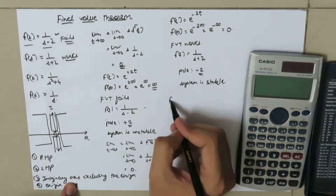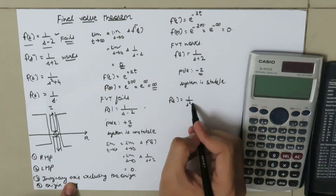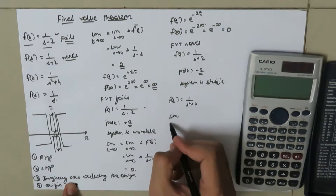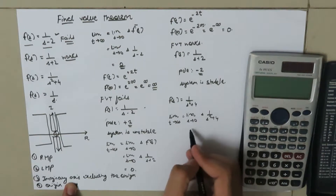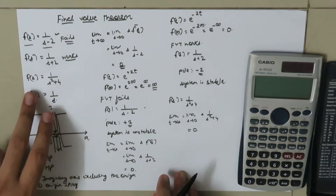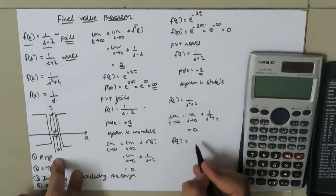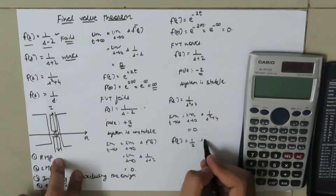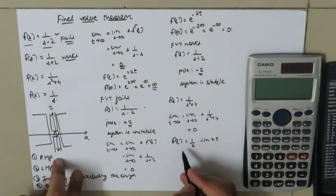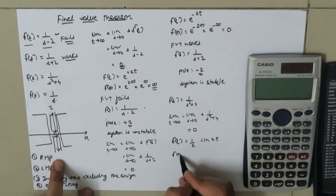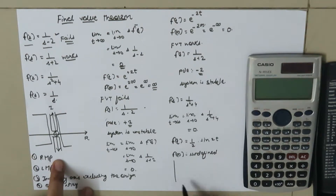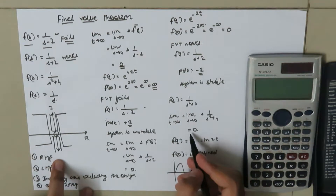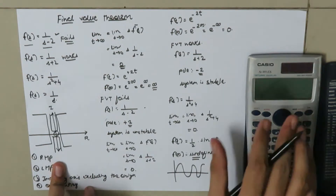For the third transfer function F(s) equal to 1 over (s squared plus 4), applying the final value theorem gives: limit as s tends to 0 of s times 1 over (s squared plus 4), which equals 0. But taking the inverse Laplace transform gives f(t) equal to (1/2) times sine of 2t. Putting infinity in place of t, f(infinity) is undefined because the sine function oscillates continuously without settling.